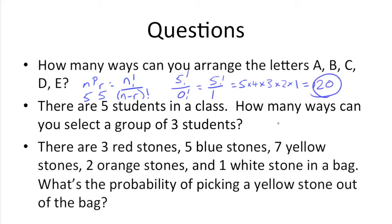Next up, we have five students in a class. How many ways can you select a group of three? This question is different from the previous one in that the order of the students doesn't matter. If we had five students A, B, C, D, and E, selecting A, B, C would be the same as selecting B, A, C, or C, A, B.